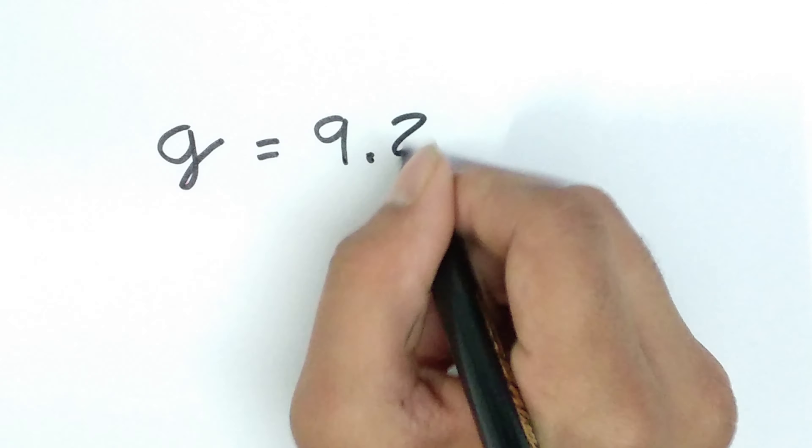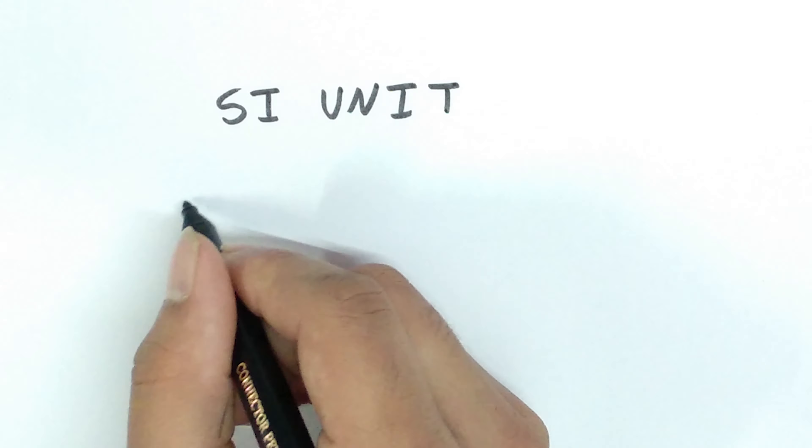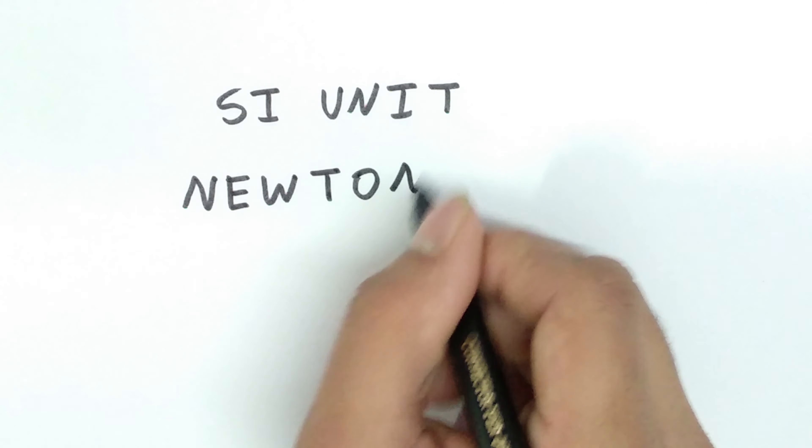Value of G is 9.81 meters per second square on earth. As the weight is nothing but force, SI unit is Newton.